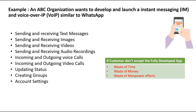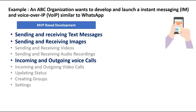So to overcome this problem, the organization will develop a Minimum Viable Product — a version of the product that will have enough features which can be used by early customers. In our example, the organization will only develop and launch three features as an MVP to the market: sending and receiving text messages, sending and receiving images, and incoming and outgoing voice calls. By doing this, the organization with minimum budget, time, and manpower will develop a version of the app with enough features so that customers can use it and provide feedback for future development.